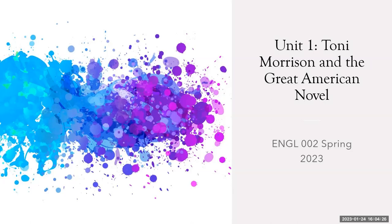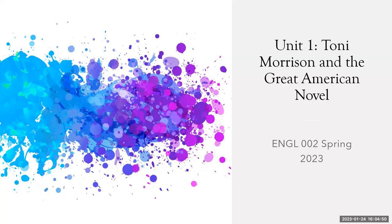Hello everyone and welcome to the first content-related video for our class, English 2, here in spring semester for Solano Community College. Today we're going to talk about our novel that we are beginning this week, Toni Morrison's Beloved, as well as the greater context for why we're studying it. We'll cover some background on what makes this novel special in the history of American and English literature, and touch on a few important themes we'll think about as we start reading over the next three weeks.